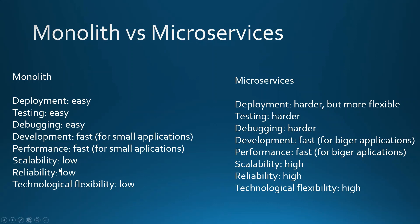For scalability, in monolith we can basically just multiply the one process, having multiple instances of one monolithic process. For microservices we have a highly scalable application because we can have multiple instances of a given single microservice, rather than multiple instances of the whole application.